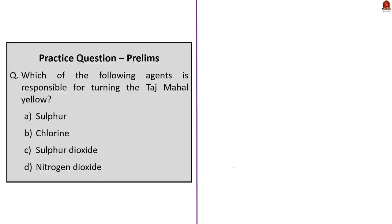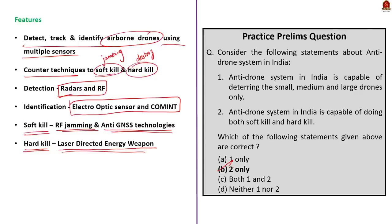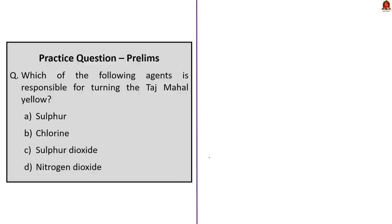Additionally, the Drone Detect, Deter and Destroy System (D4S) is the first indigenously developed anti-drone system inducted into the Indian Armed Forces. It was developed by DRDO and manufactured by Bharat Electronics Limited.